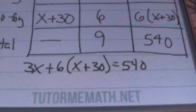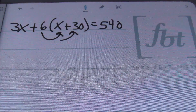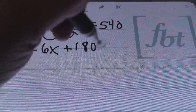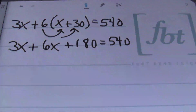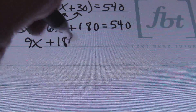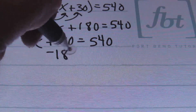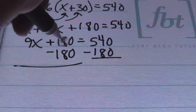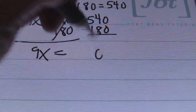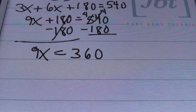Alright, the first thing we'll do is distribute. I get my arrows popping. So I end up with 3X plus 6X plus 180 equals 540. From there, I'm going to combine like terms: 3X plus 6X gives me 9X. I bring down the positive 180 as well as the 540. Then I'll subtract 180 from both sides. The 180 cancels out. I bring down 9X, which now equals 360.